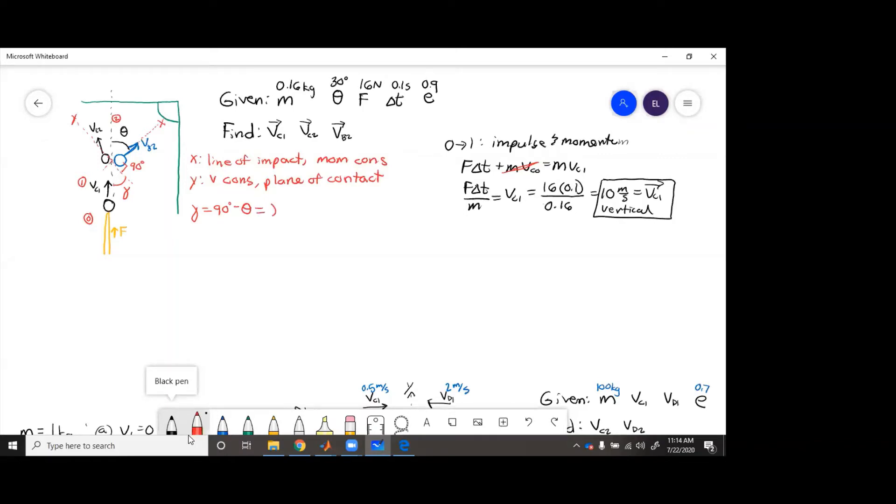Well, theta is 30, so gamma equals 60 degrees. We know that because 180 minus 90 is 90, and so gamma plus theta has to equal 90. So anyway, gamma is 60 degrees.